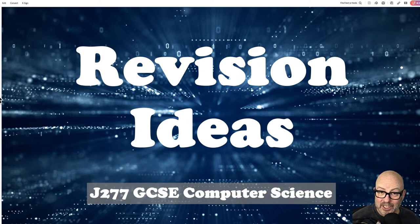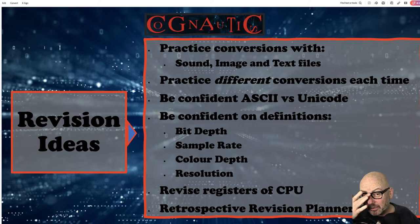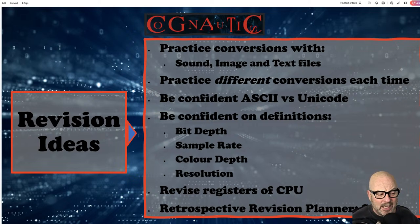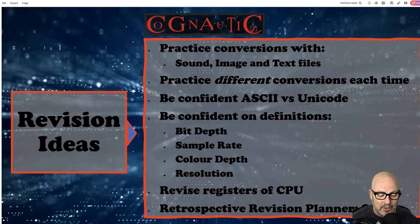We've got it — 6:44 on the dot. Revision ideas and things to think about for next time: practice your conversions. I reckon they're going to make a fuss over converting sound, image and text files — working out what size they are — and then making you do some work with bits, bytes and megabytes, converting from one to the other. Be confident with ASCII — one byte per character — and Unicode — four bytes per character. Make sure you can define bit depth, sample rate, colour depth and resolution. If you've got those four and you're happy with the notion of file size getting bigger or smaller and quality improving or not, and what lossy and lossless are, you are done. Have a lovely Wednesday evening — see you in exactly one week. Bye-bye.